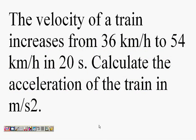The velocity of a train increases from 36 km per hour to 54 km per hour in 20 seconds. Calculate the acceleration of the train in meters per second squared.